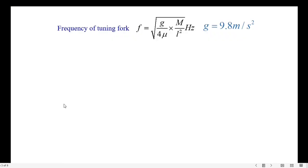The frequency of tuning fork is measured using the expression given right here: f equals square root of g over 4 mu times m over l square, where g equals 9.8 meter per second square.